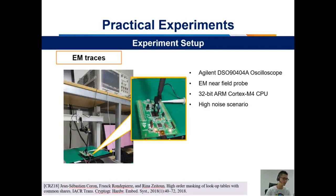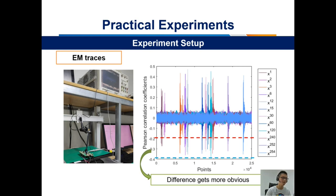The EM traces are collected by an oscilloscope with an EM probe, and the code also runs on an ARM Cortex-M4-based microcontroller. It is a high-noise scenario: the correlation coefficient between the leakage and the corresponding sensitive value is lower. However, the difference in noise level across monomials becomes more pronounced, which may affect the attack results more greatly.